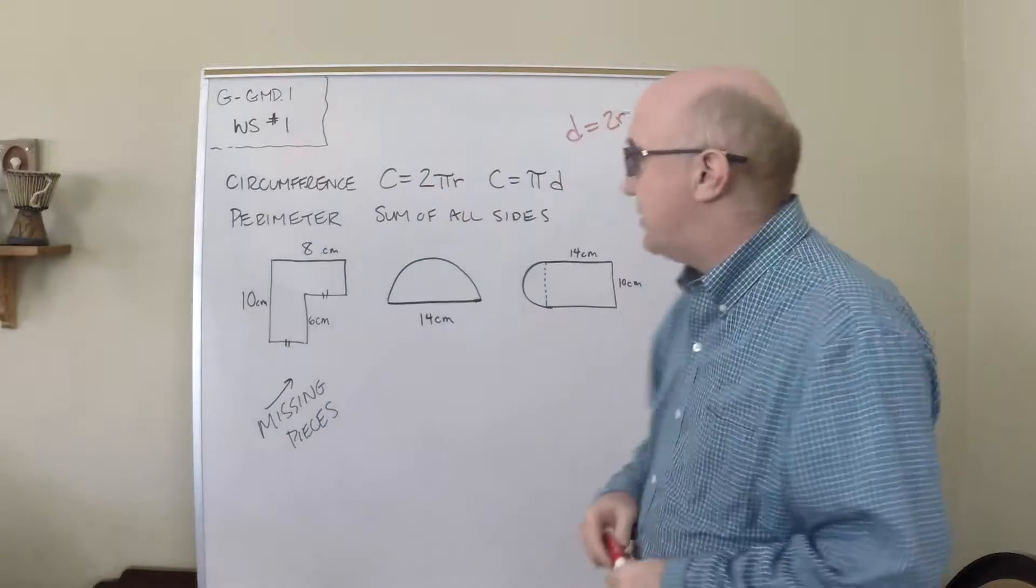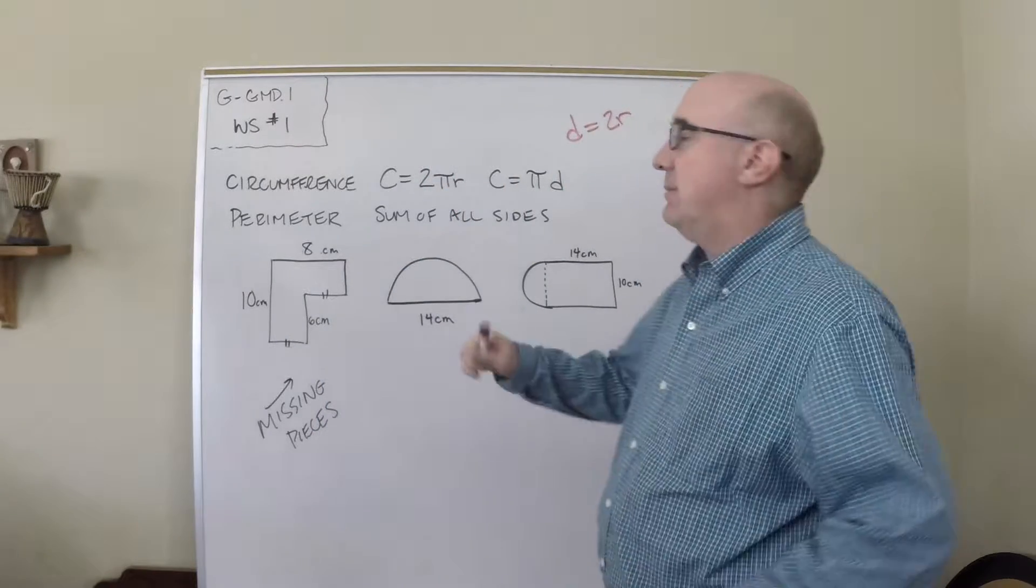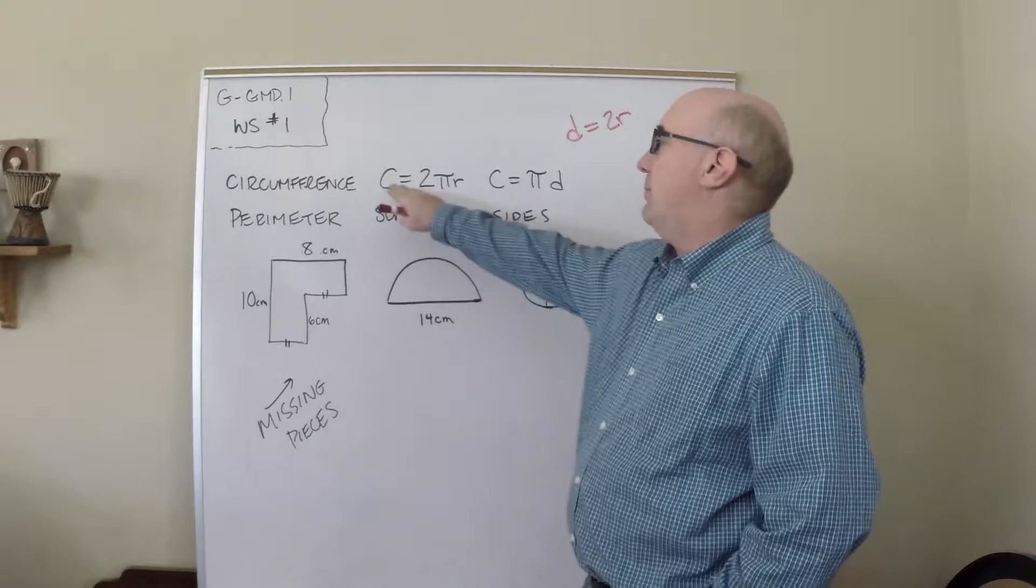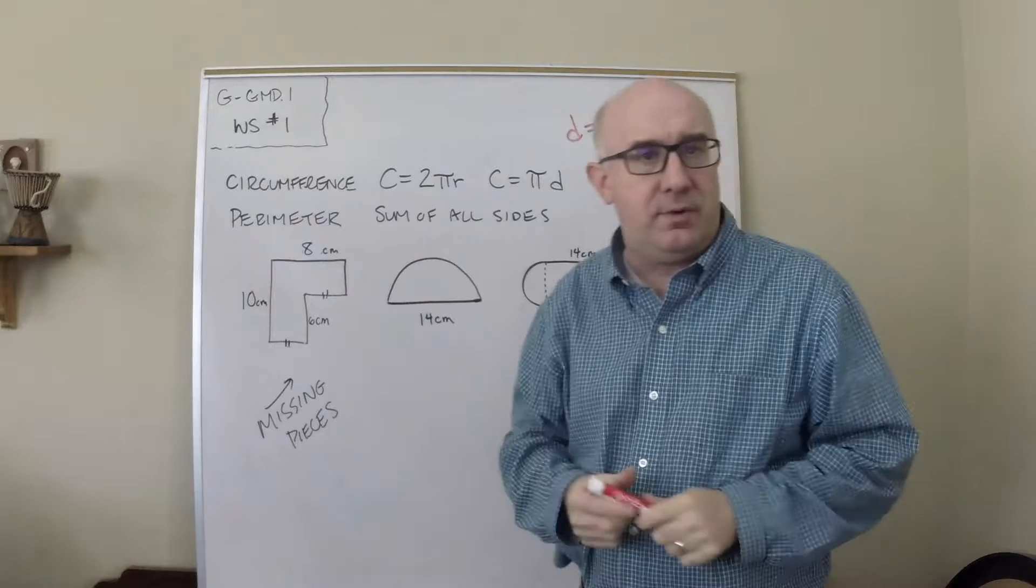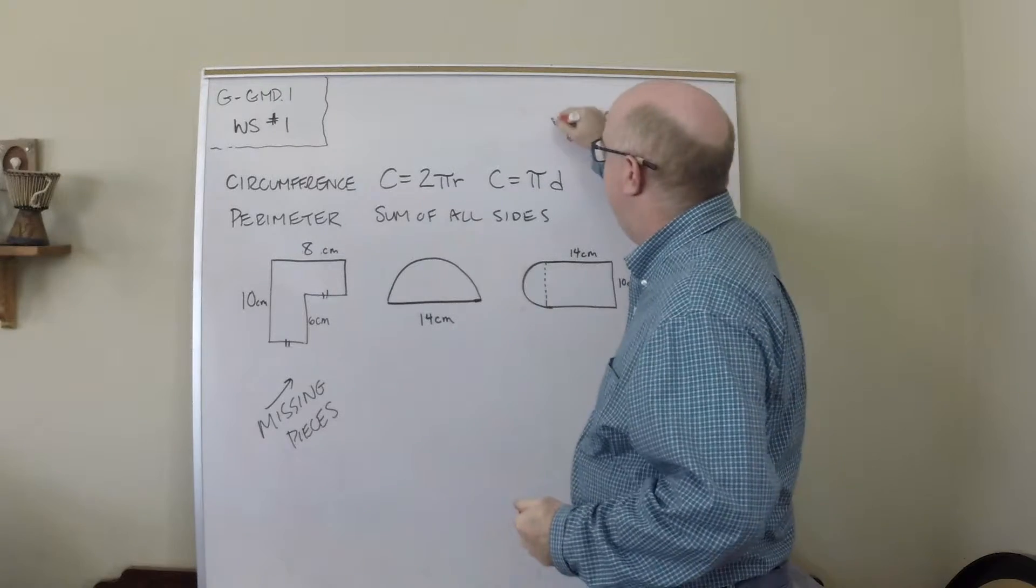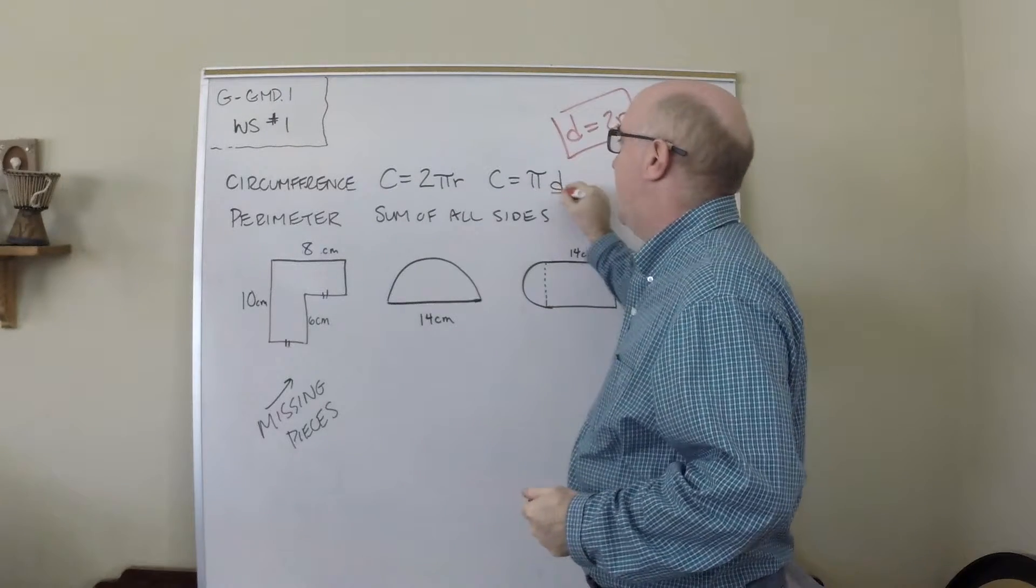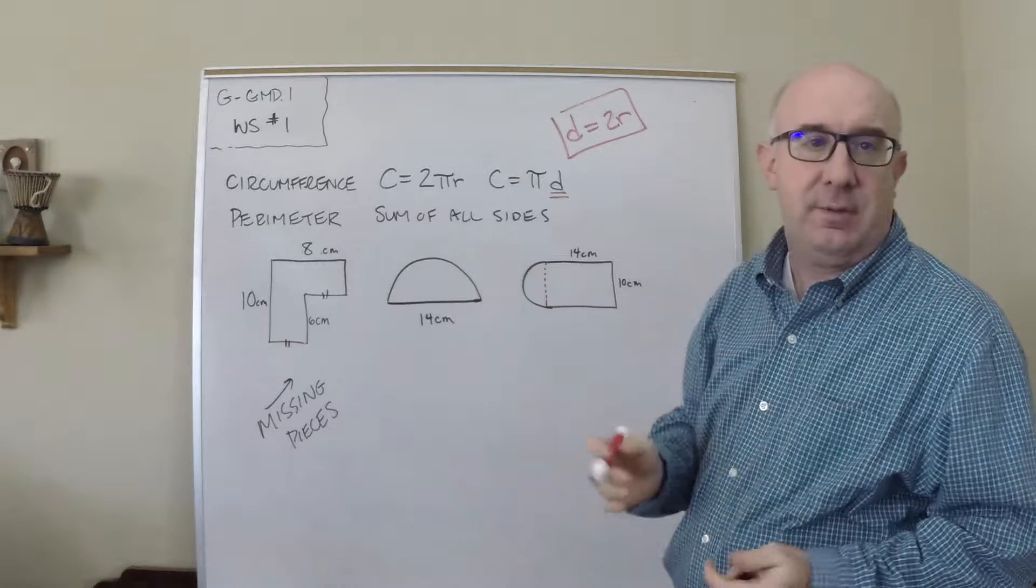In this case, we have some basic formulas. Circumference is 2πr or πD. Why are there two formulas? Well, a diameter is equal to two radii, so the diameter in this formula can be converted to two radii in this formula.